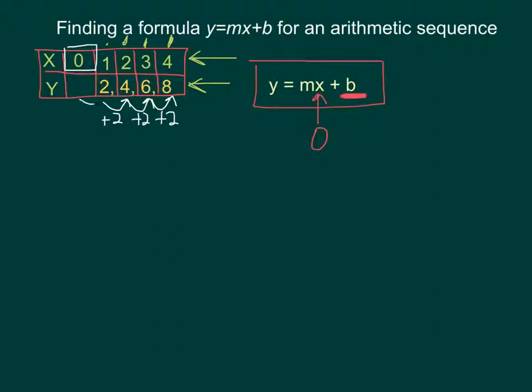So what could I add to 2 to get to 2? In this case, it's just 0. So my arithmetic sequence stays the same.